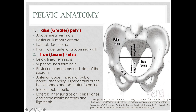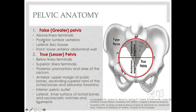When we talk about the pelvis in obstetrics, we talk about the false or greater pelvis and the true or lesser pelvis. The demarcation between these two is the linea terminalis. Anything above the linea terminalis is the false or greater pelvis. Posteriorly, its border is the lumbar vertebrae; laterally, the iliac fossae; and anteriorly, the lower anterior abdominal wall.